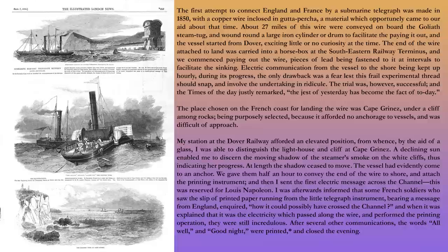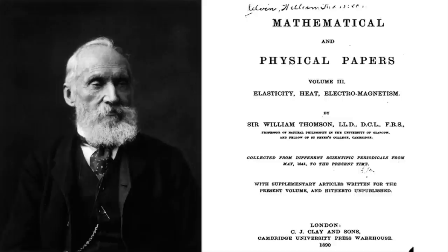Laying the transatlantic cable to the USA took three very expensive attempts, and succeeded in great part due to the involvement of William Thompson. Who, as well as becoming famous and wealthy as a result, was knighted in 1866 for his efforts. Sir Thompson was then elevated in 1892, becoming Lord Kelvin.